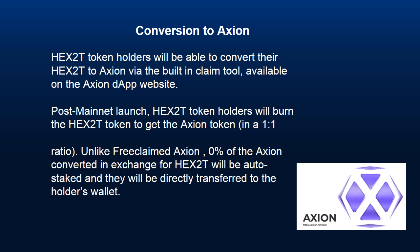Conversion to Axion: HEX 2T token holders will be able to convert their HEX 2T to Axion via the built-in claim tool available on the Axion DApp website post mainnet launch. HEX 2T token holders will burn the HEX 2T token to get the Axion token in a 1-to-1 ratio. Unlike free claimed Axion, 0% of the Axion converted in exchange for HEX 2T will be auto-staked — they will be directly transferred to the holder's wallet.